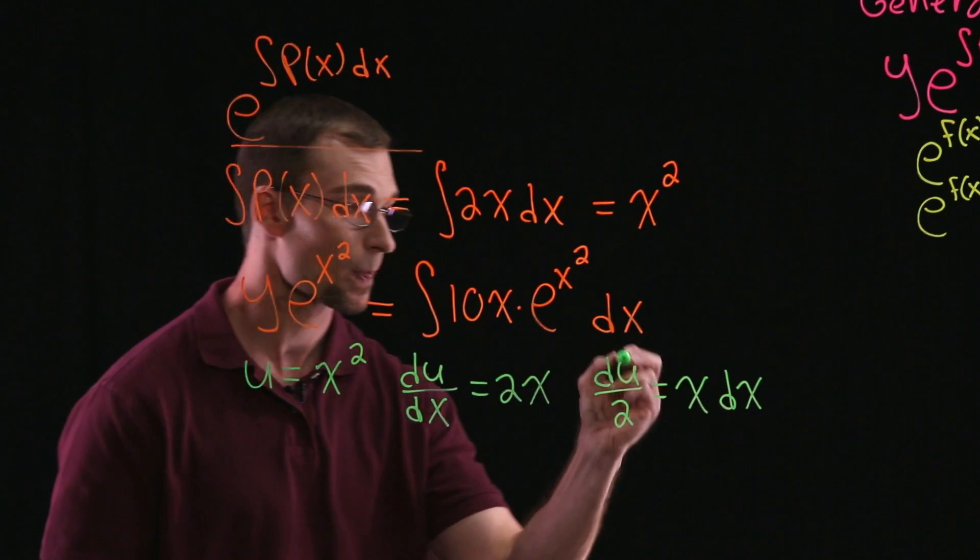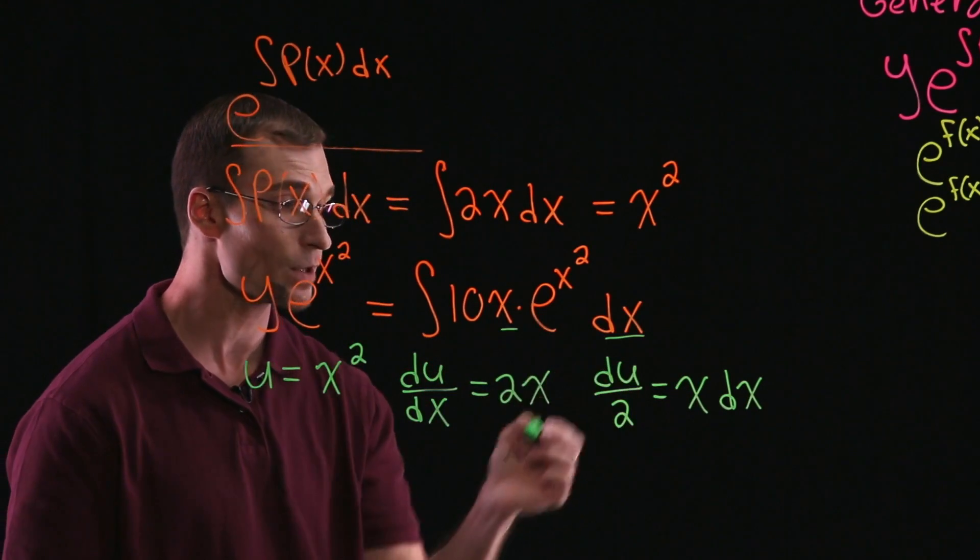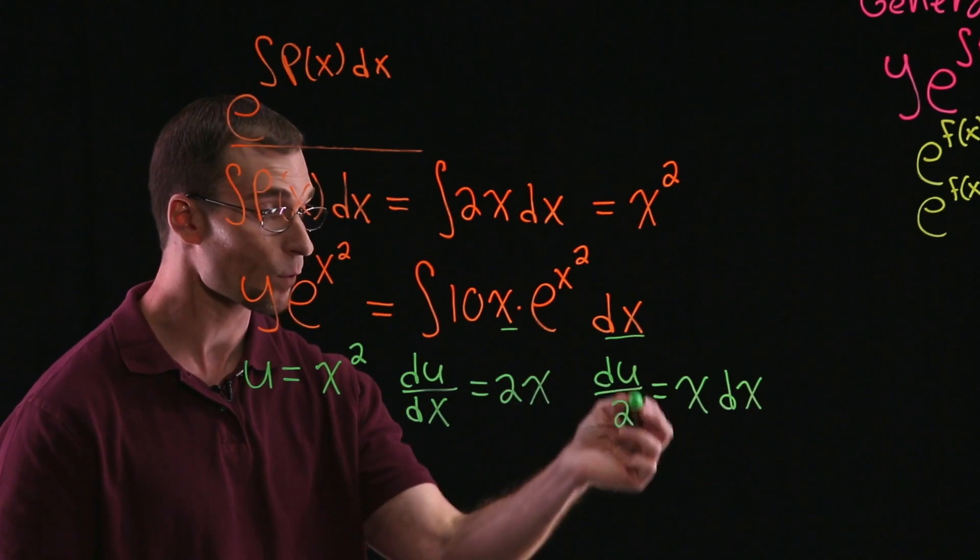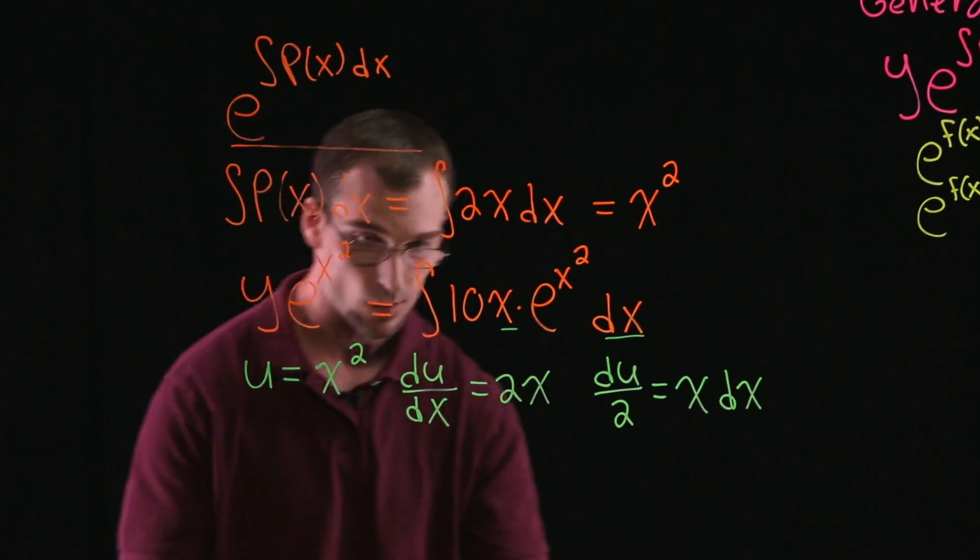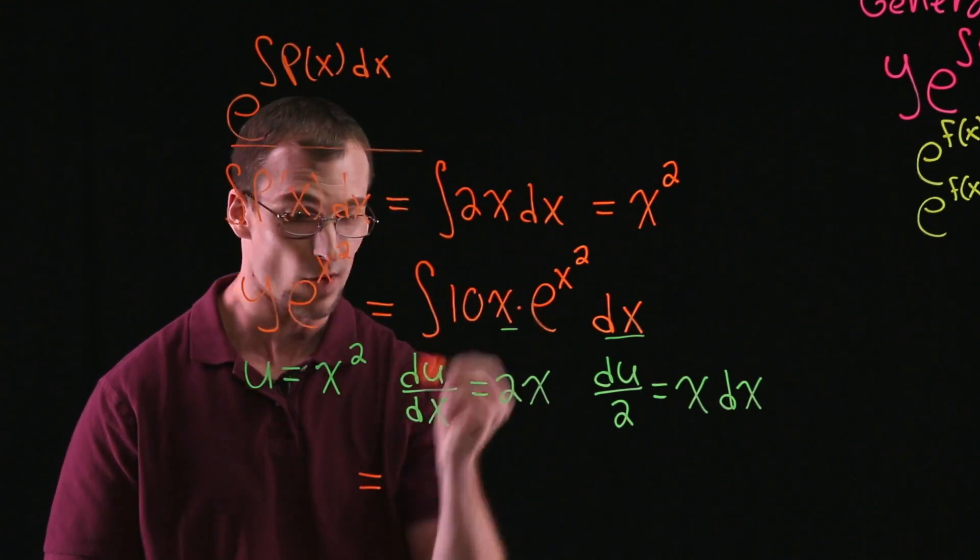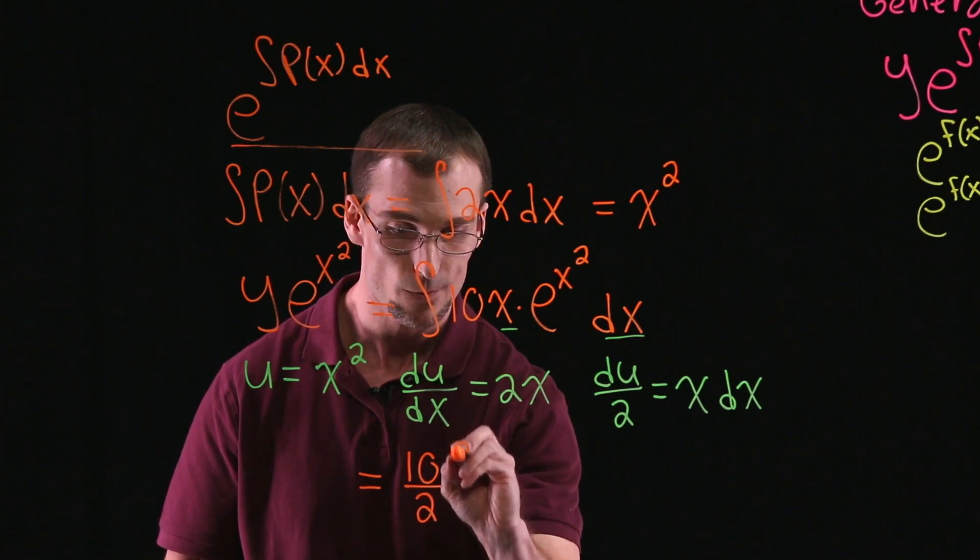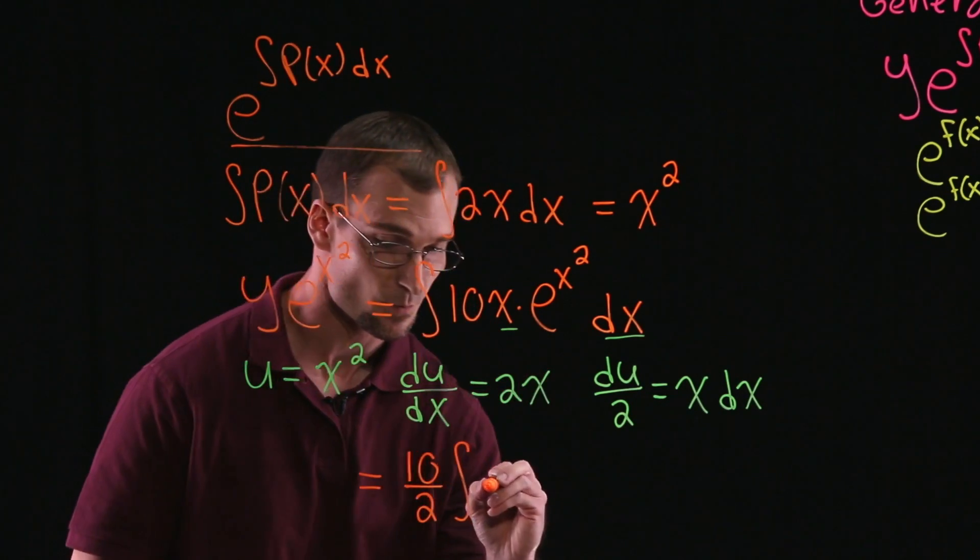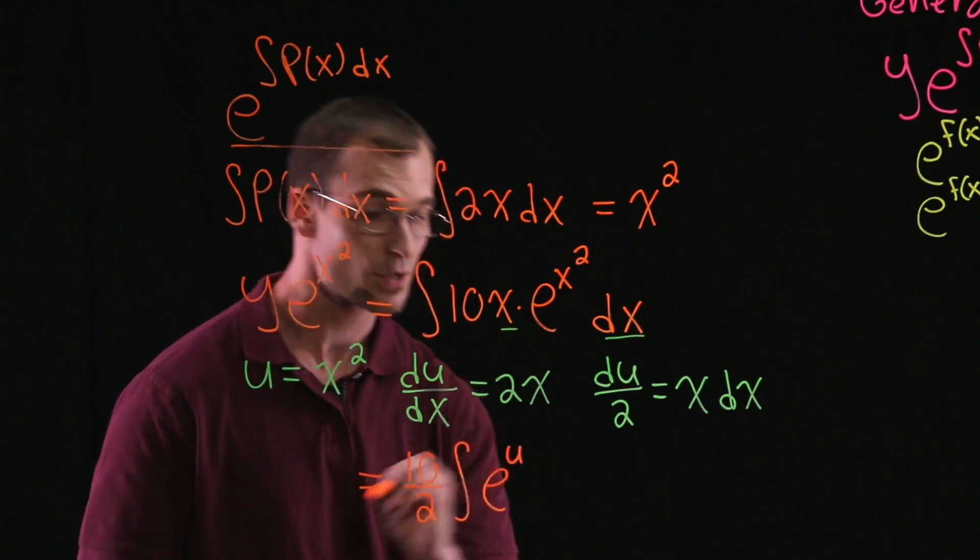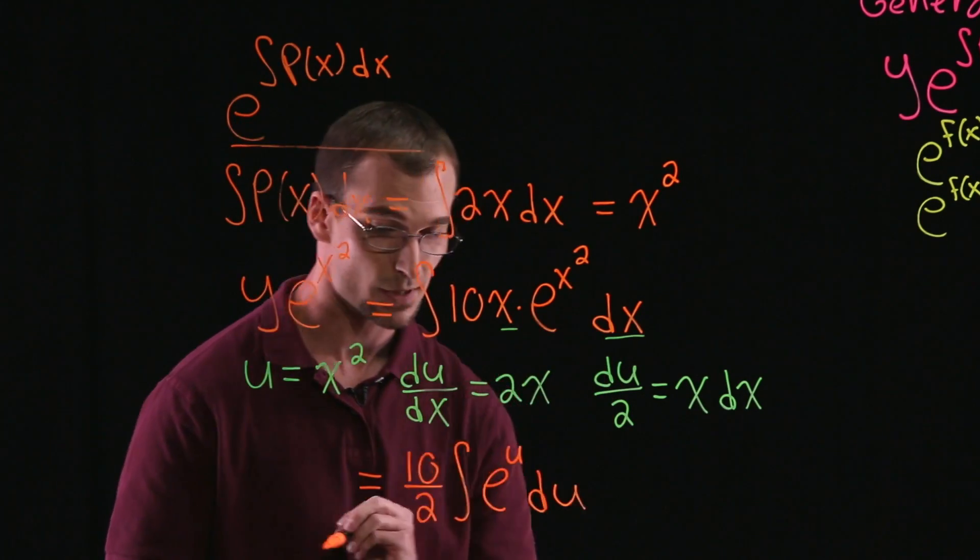So this will give us du divided by 2 equals x dx. So sitting up in our integral, our x dx term will go out for du, and we'll have 1 half, or dividing by 2, out in front. Let's go ahead and put that down. So again, the right-hand side is going to be equal to, we'll bring the constants out. We have 10 over 2 times the integral e to the u, since u is our x squared, and x dx become du.